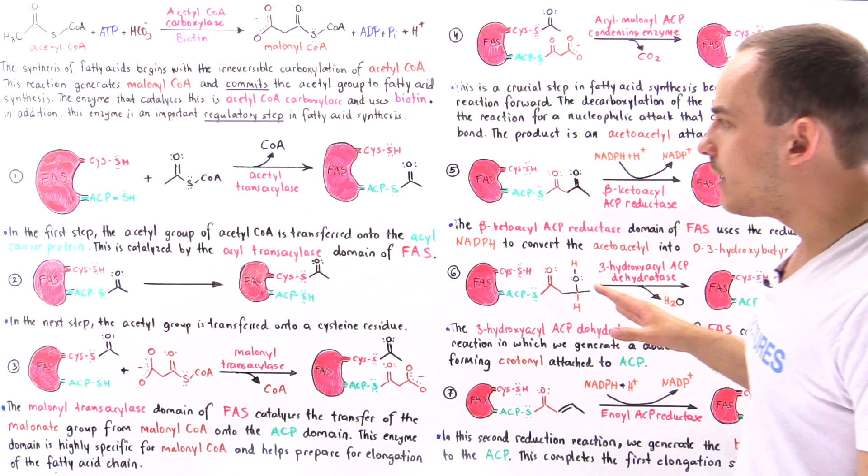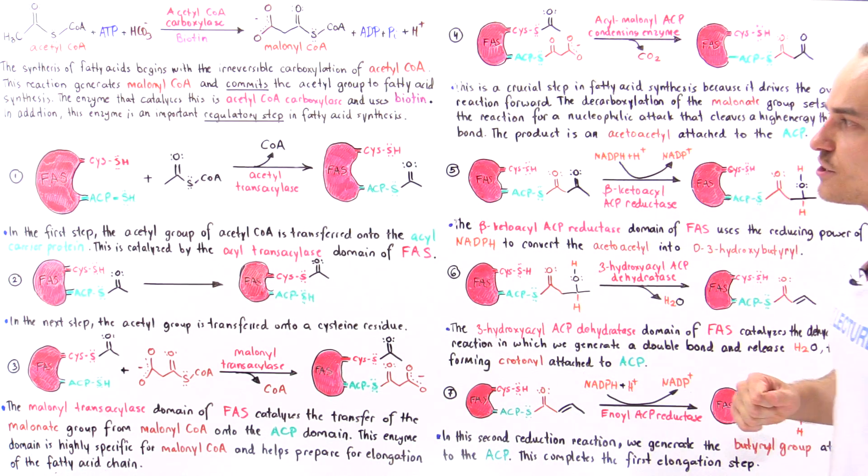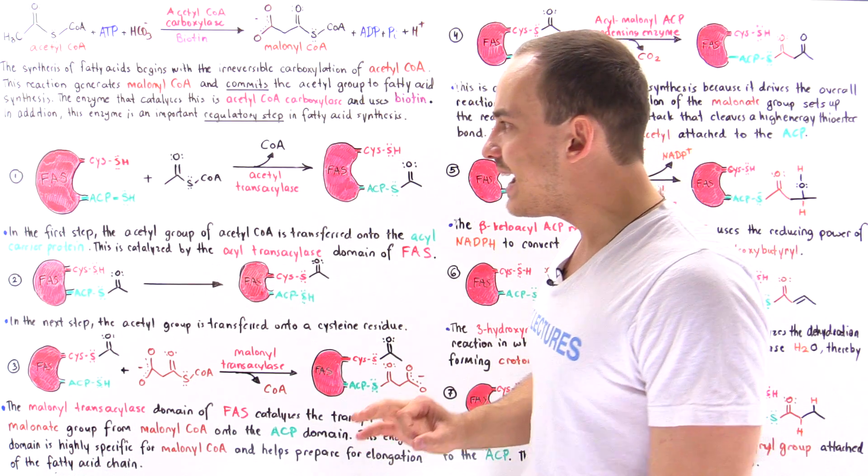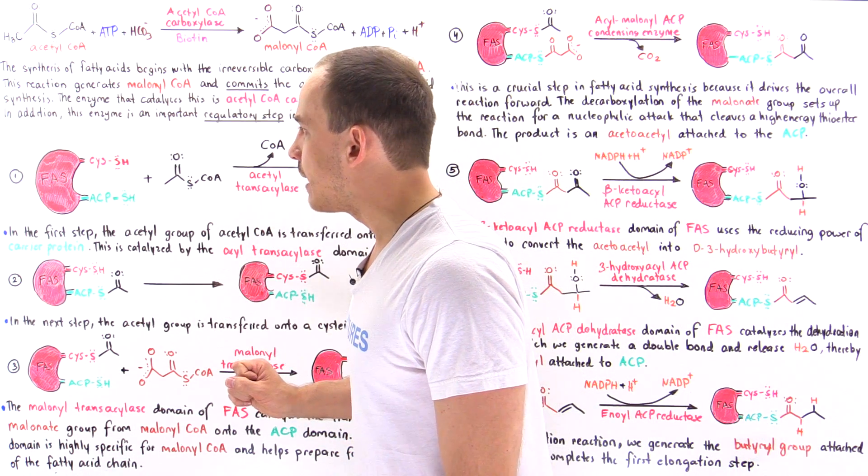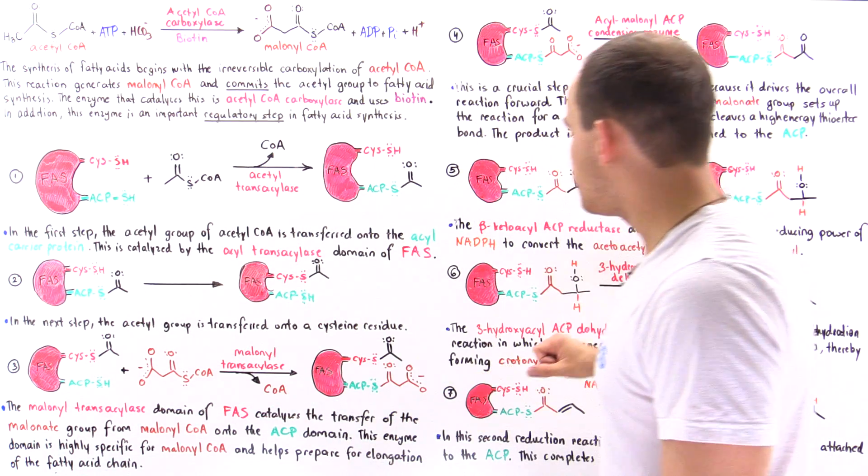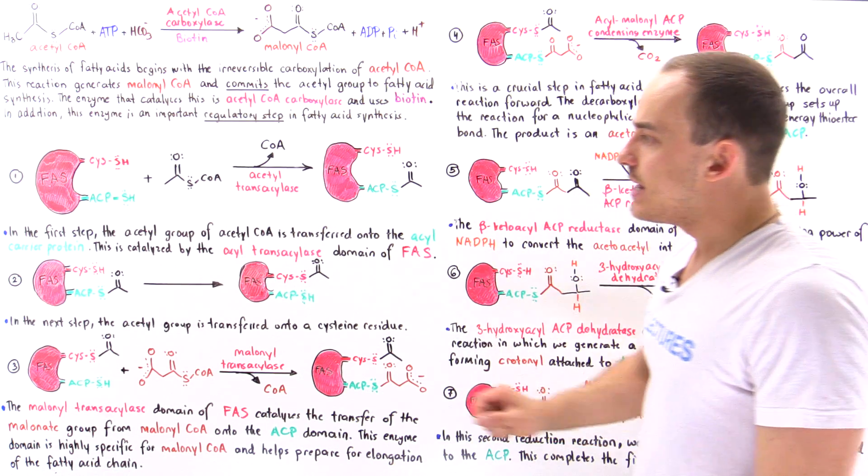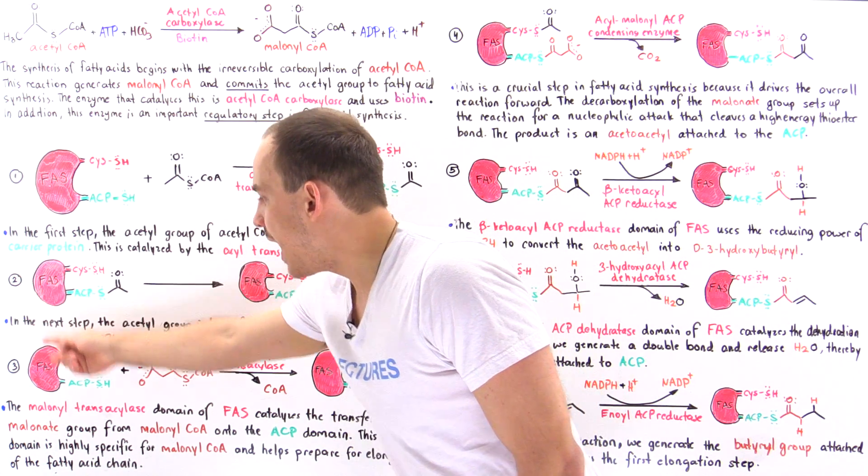So these are the steps involved in synthesizing fatty acid molecules. Again, the first elongation step involves steps one through step seven, but then these steps from two and onward have to take place six more times.